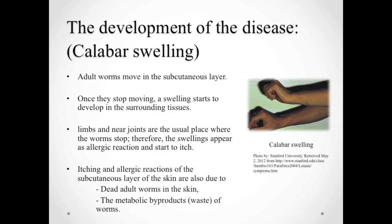Calabar swelling is one of the main symptoms of this disease. Once the larvae enter the human body through the wound caused by a deer fly bite, they enter the subcutaneous layer where they mature into adults. The adult worms keep moving and wandering throughout the subcutaneous layer. Once they stop moving, Calabar swelling starts to develop in the surrounding tissues. Limbs and nearby joints are the usual places where these worms make their stops, and the swellings appear as allergic reactions and begin to itch.